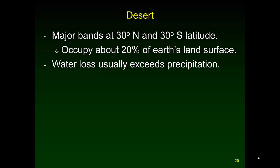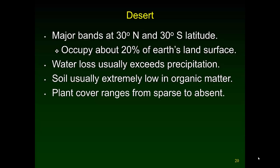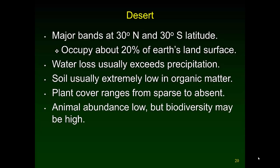In the desert, water loss usually exceeds precipitation. The soil is extremely low in organic matter, there's very low productivity, and very little to put into the soil. Plant cover ranges from sparse to, in some places, totally absent. There are very few animals in the desert, but there's quite a bit of diversity among them — population sizes are small, but there can be high biodiversity. There are also very strong behavioral adaptations to the extreme conditions.